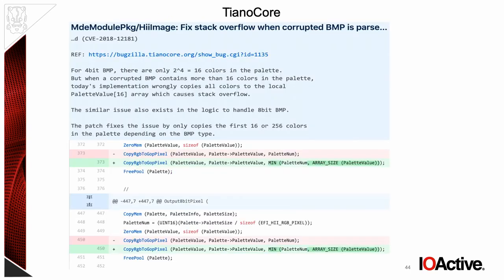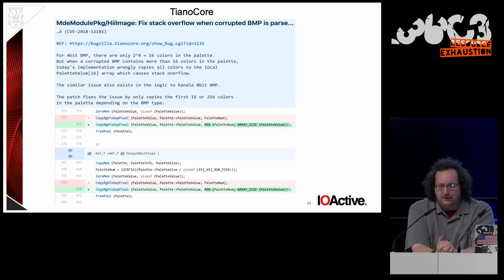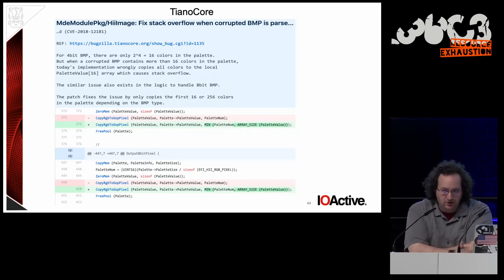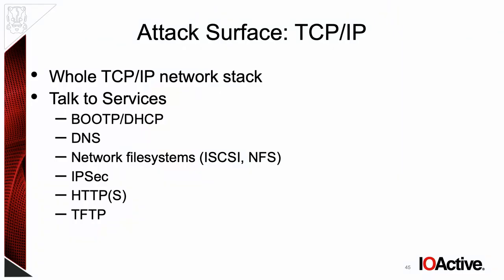In TianaCore, there was a bitmap splash screen parser bug. If you have a 4-bit bitmap, it has a 16-byte palette. It goes and reads that 16-byte palette, except you tell it how big the palette is — you can say you're giving it a 256-byte palette for a 4-bit bitmap, and it'll read it into the 16-byte buffer. For 8-bit bitmaps it was broken the same way. These are just the tip of the iceberg — there are many, many more, and this did not take long to find.